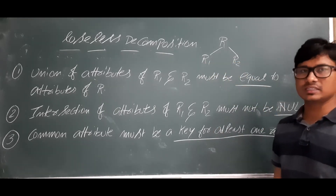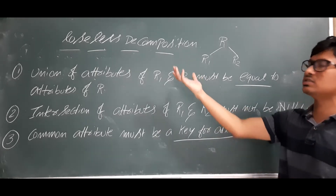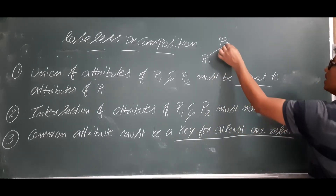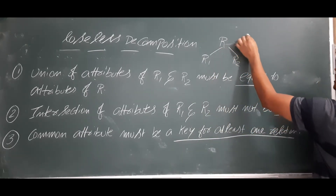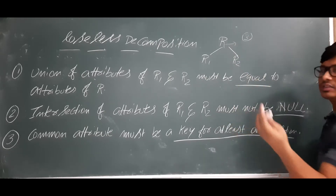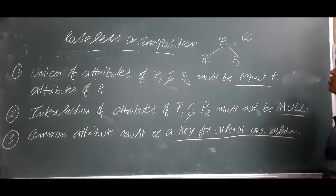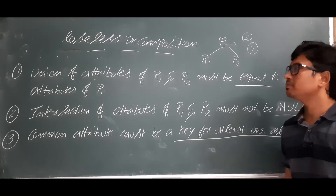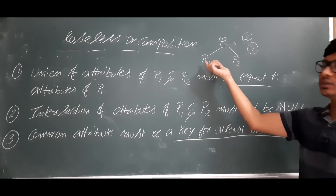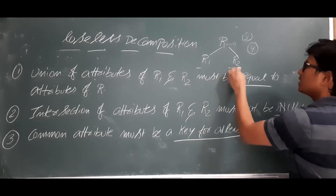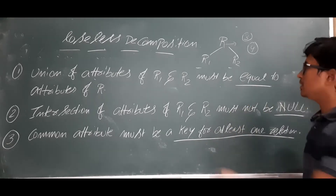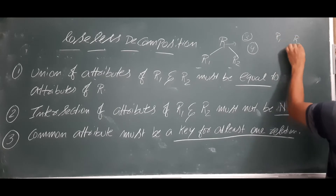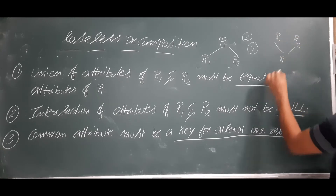What is meant by lossless and what is meant by lossy? If you understand lossless then obviously you will understand lossy. Let's take a relation with some attributes — for example three attributes and four tuples. When you decompose you will get R1 and R2. Now when you combine again, meaning when you apply the join operation on R1 and R2, you should get back R.